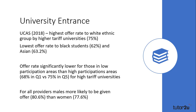UCAS measures social class differently when measuring offers, dividing students into areas based on the percentage of people going to university from that area and assigning them to one of five quintiles. Quintile 1 has lower rates of participation — around 10-15% of 18-year-olds — and quintile 5 has higher participation, usually 50-60%. The data shows that if you live in a low-participation area, you are less likely to be offered a place at a high-tariff university, which could be explained through cultural and social capital.